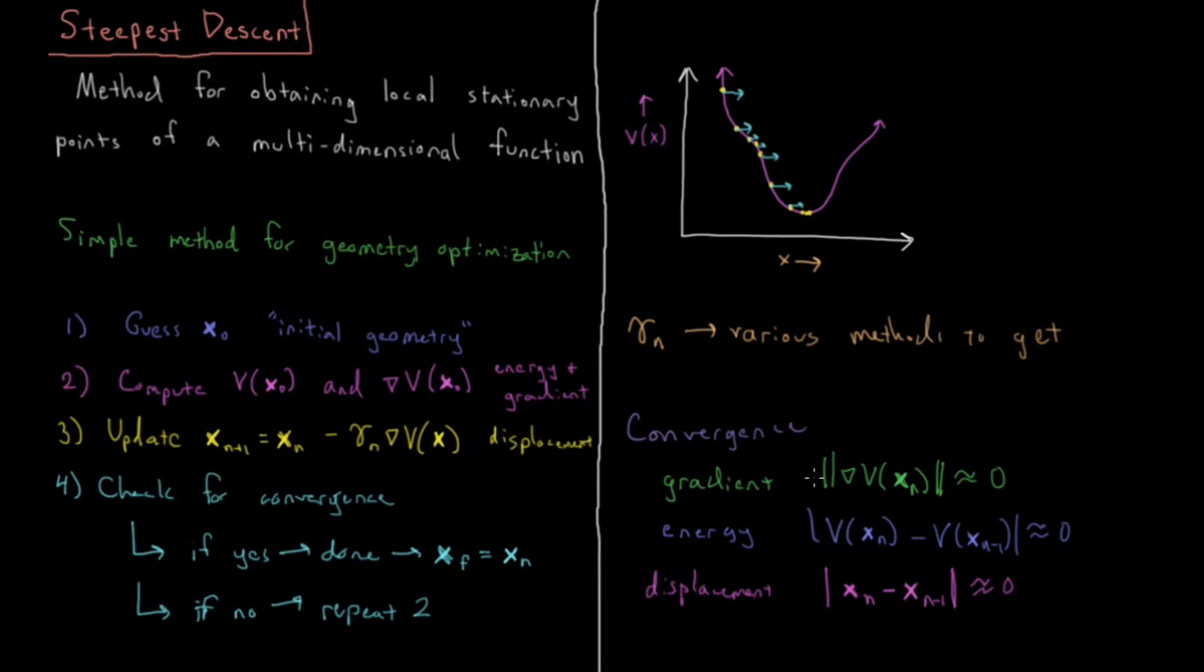So if all three of these, or if two out of the three of these, or whatever convergence criteria you specify have converged, then you will finish and you'll be done with the loop here.